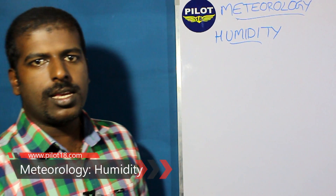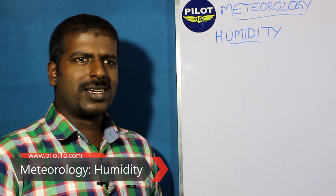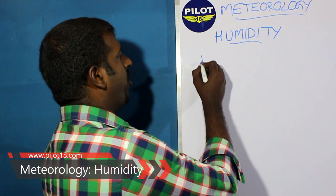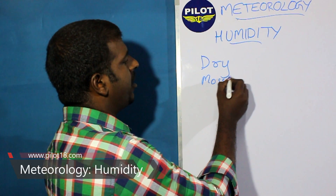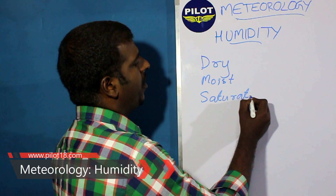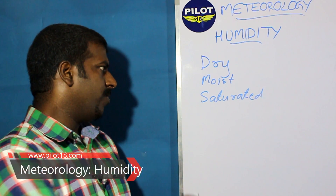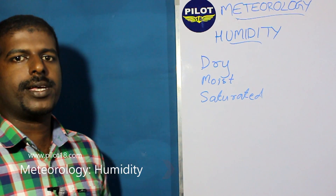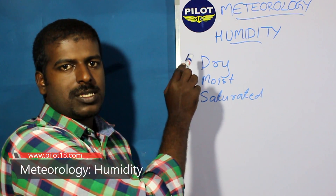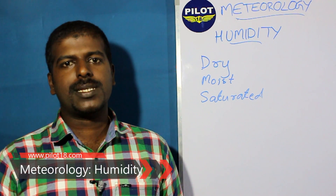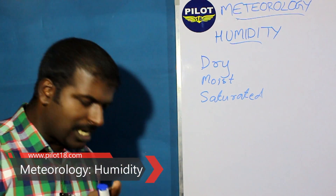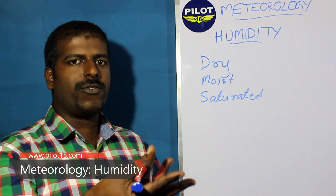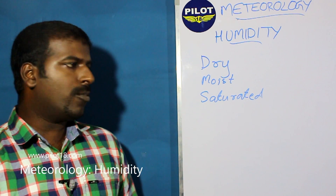If air contains humidity, we call it humid air. There are three further notions: dry air, moist air, and saturated air. Dry air means no humidity is present — zero. Moist air means there is some humidity but the air can still hold more. Saturated air means the air has condensed humidity to such an extent that not even a single drop more can be added; if more water vapor is added, condensation will occur.